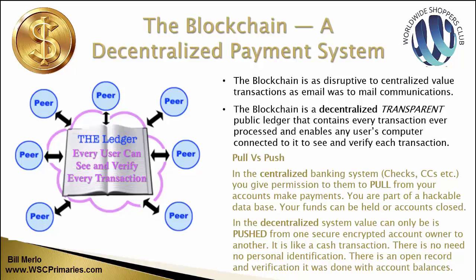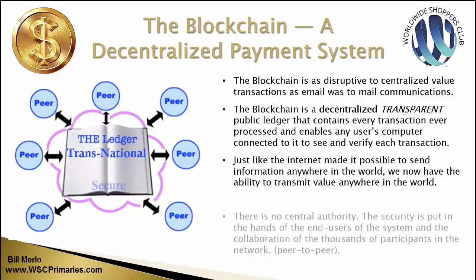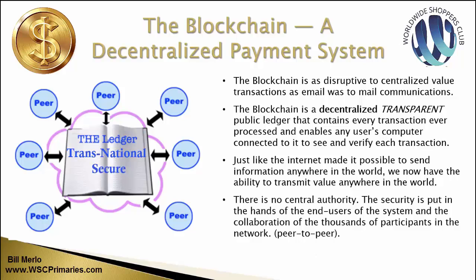The great thing about push technology — the decentralized system — is that everybody can see it. Here's this ledger, and every user can see and verify every single transaction. Certain people specialize in verification, and that's another neat part of this blockchain technology. Value is only pushed from one member to another, a group of people verify it, and everybody can see it — those three things make it so unique. Just like the internet made it possible to send information anywhere, we now can transmit value anywhere in the world, peer to peer, with no central authority.